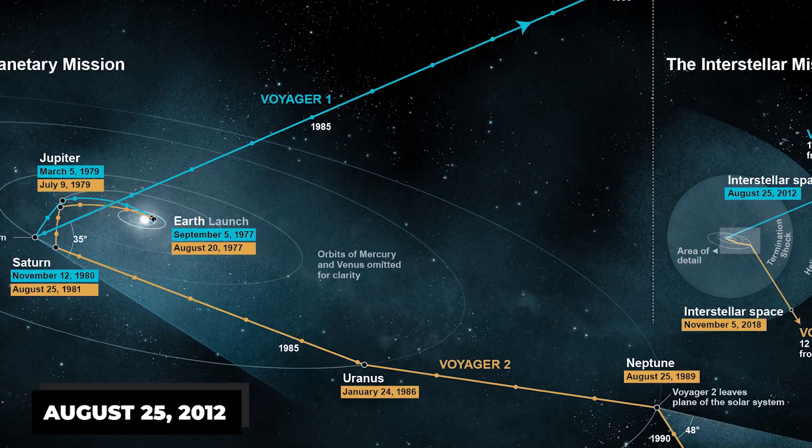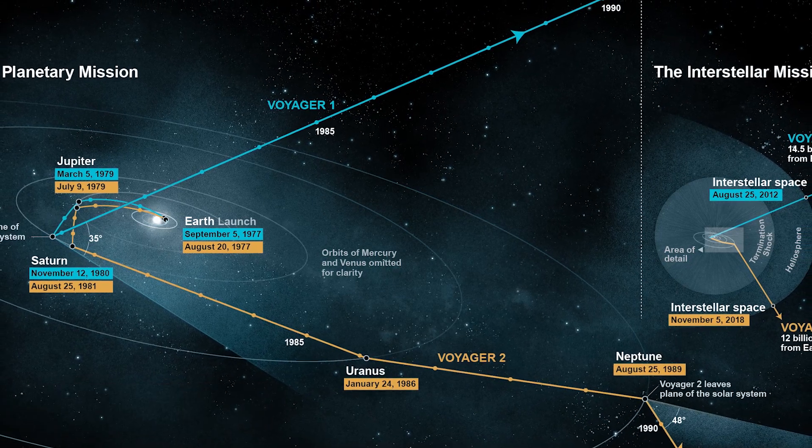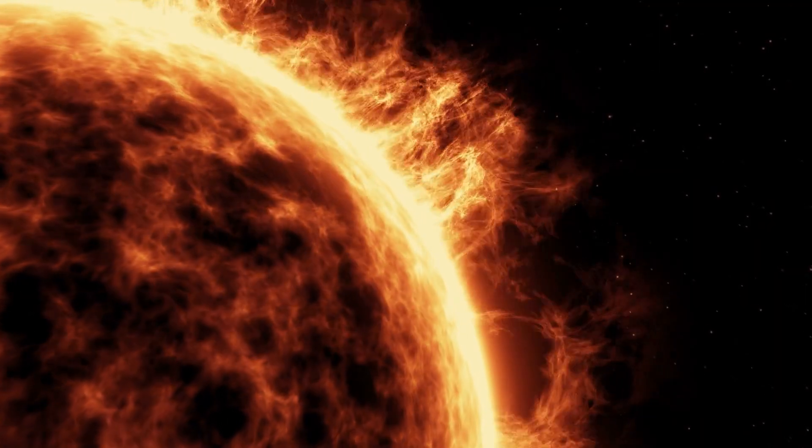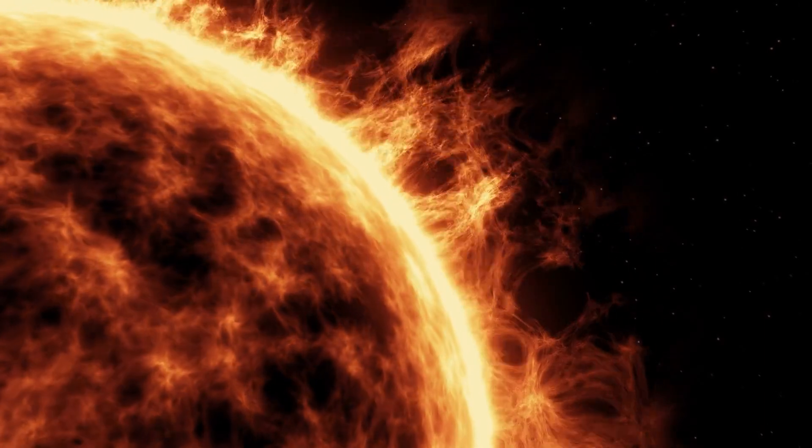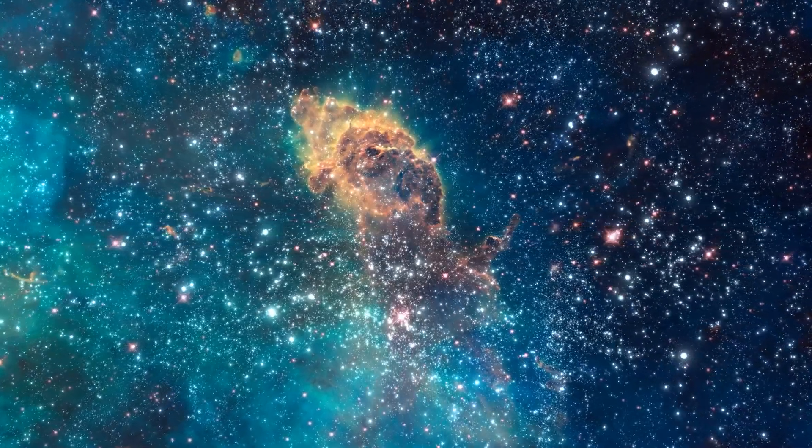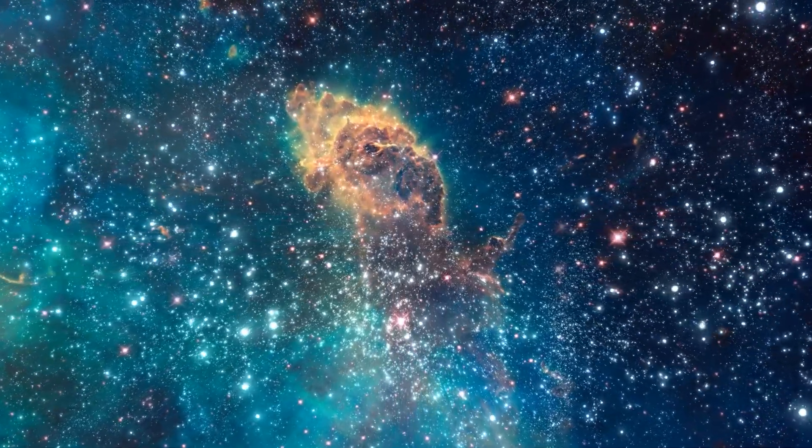Finally, on August 25, 2012, Voyager 1 crossed the heliopause and sent back intriguing data. It confirmed an anticipated increase in plasma density, but revealed no shift in the ambient magnetic field direction. This was unexpected, as it was assumed that transitioning from a region dominated by the sun's magnetic field to one influenced by other stars would bring about such a change.